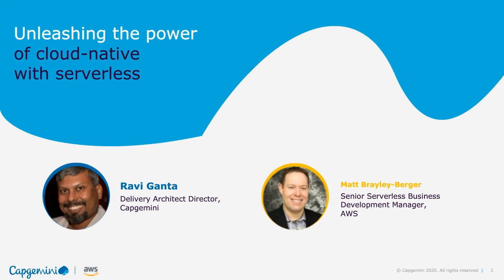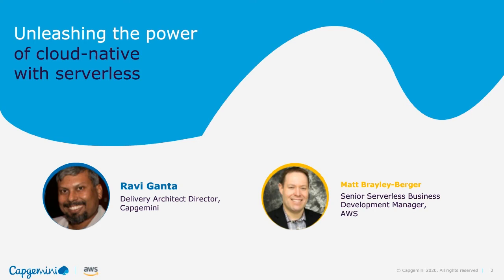Ravi and Matt plan to cover quite a bit of ground with respect to cloud-native and serverless. Today we're going to talk about cloud-native overview, some of the key tenets, business drivers of cloud-native, followed by different deployment models for cloud-native on the AWS platform. We will also cover serverless, advantages of serverless, some of the benefits and considerations, commonly asked questions, and some of Capgemini's accelerators to help customers make this transition in an accelerated fashion.